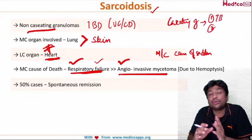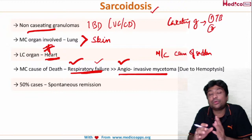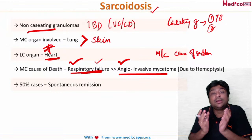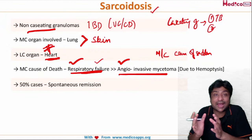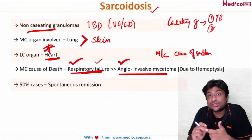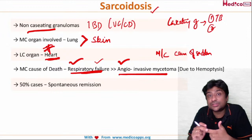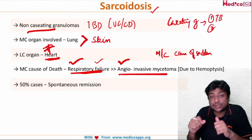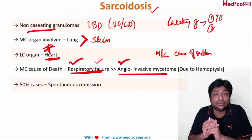To recap: sarcoidosis is a disease with abnormal collection of inflammatory cells forming granulomas — non-caseating granulomas. Other causes of non-caseating granulomas are ulcerative colitis and Crohn's disease. We've covered which is the most common organ, second most common, least common, and the most common cause of death — all frequently asked in examinations.